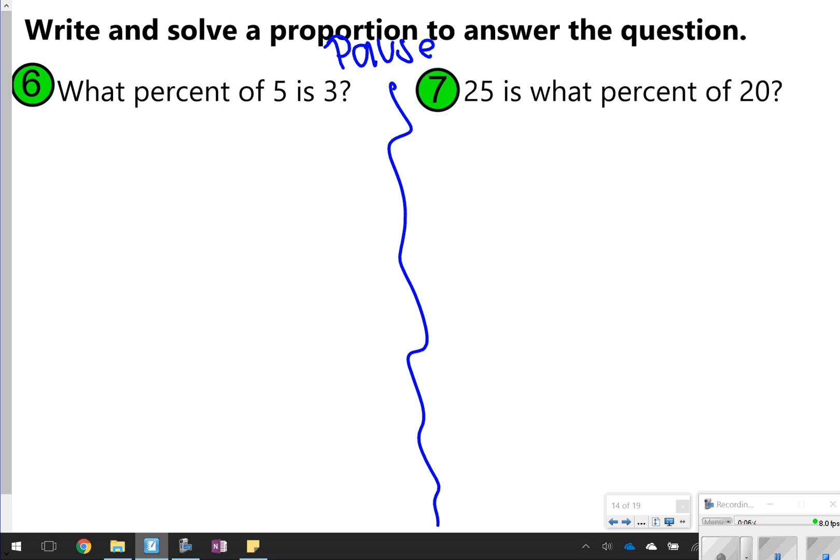All right, here we go. So what percent of 5 is 3? Again, we don't know the percent, so I'm going to just go ahead and write it and put an x over the 100. And then it says, what percent of 5? So out of 5 is 3. So 5 is the 'of', and 3 is the 'is'. I'm going to cross multiply. I get 5x is equal to 300. And then I'm going to divide both sides by 5, so that x is equal to 60.